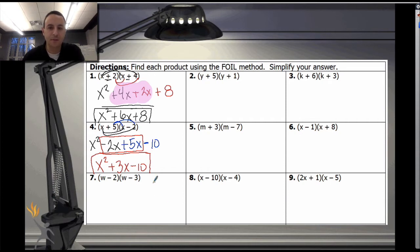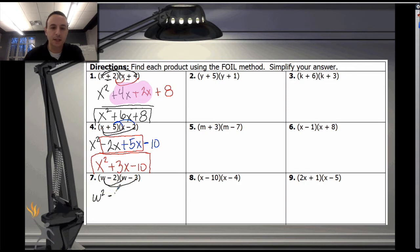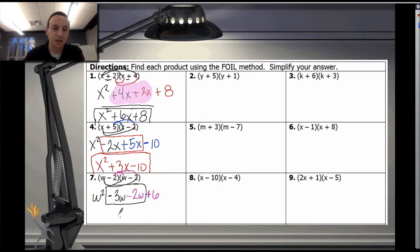Now let's look at one with two negatives: (w minus 2)(w minus 3). It doesn't change the idea — we're still distributing from w and negative 2 to the second two terms. Just remember to apply your negative rules. w times w is w squared; w times negative 3 is negative 3w. Then distributing negative 2: negative 2w, and negative 2 times negative 3 gives positive 6. Combining: w squared minus 5w plus 6.